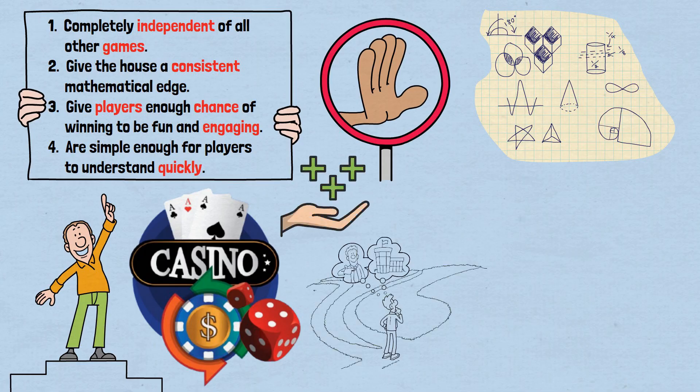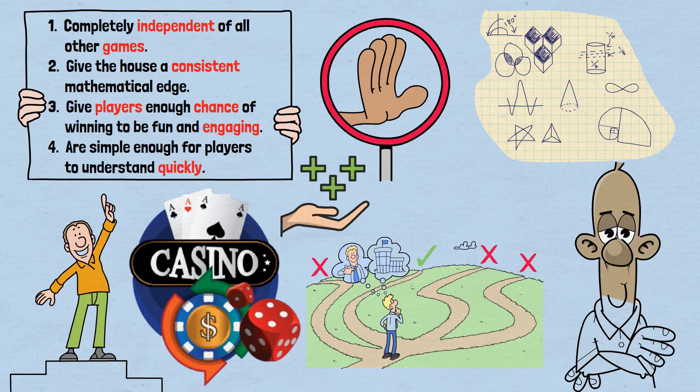Parrondo's Paradox proves that sometimes the solution isn't to find better options. It's to find better ways to combine the options we already have.